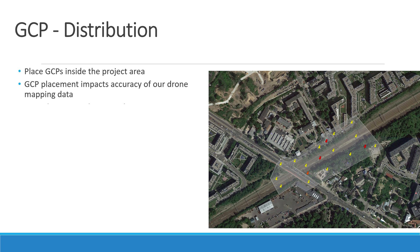GCP distribution inside the area of interest is very important, because it directly affects the accuracy of the drone mapping data. The GCPs should be spread evenly across the project area.